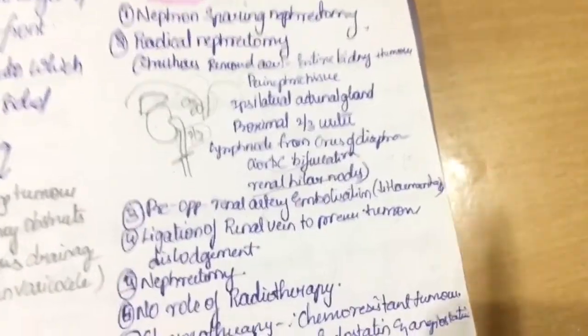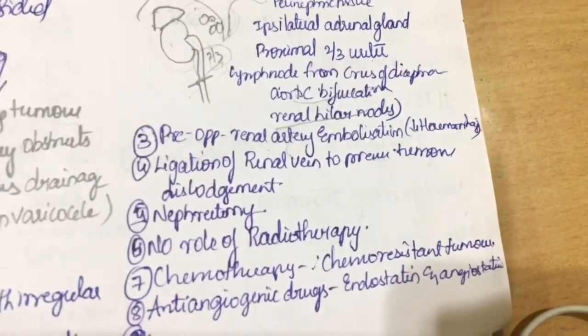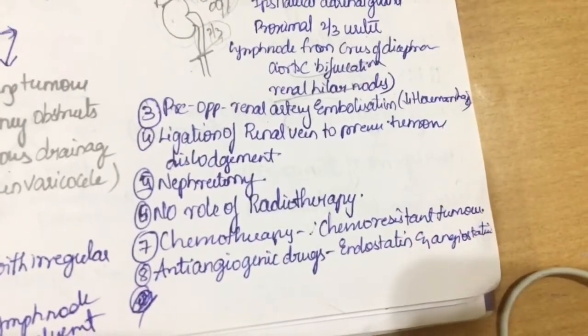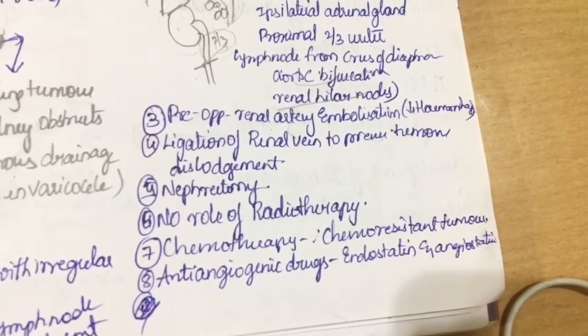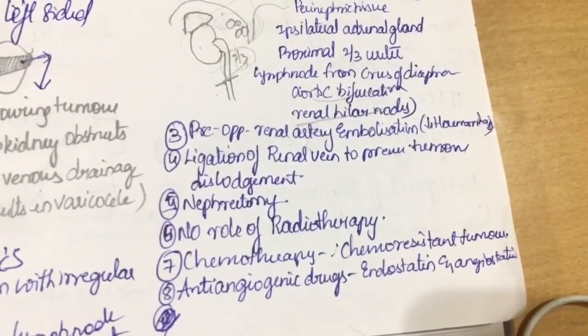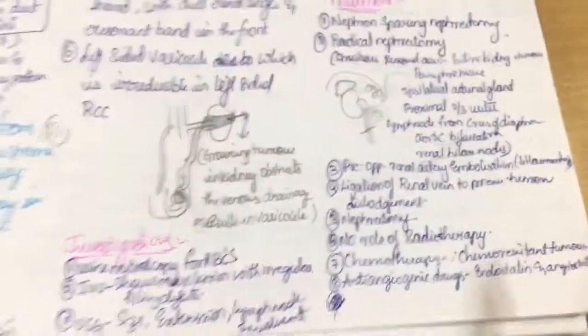Pre-operative renal artery embolization is done to reduce hematoma and ligation of renal vein to prevent tumor dislodgement. Nephrectomy, there is no role of radiotherapy and chemotherapy as the tumor is chemo-resistant. And anti-angiogenic drugs such as endostatin and angiostatins are used.